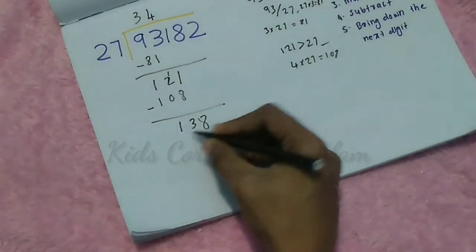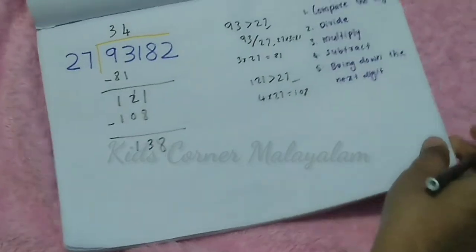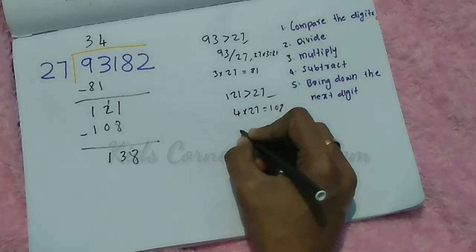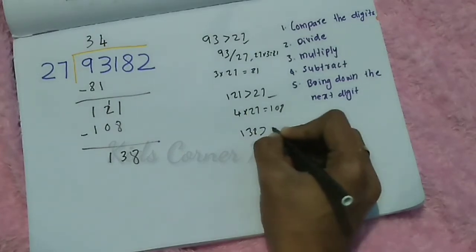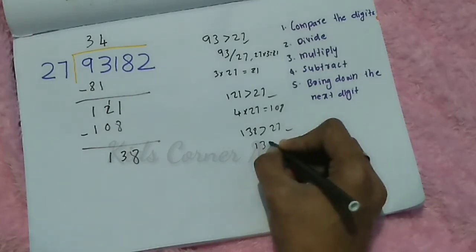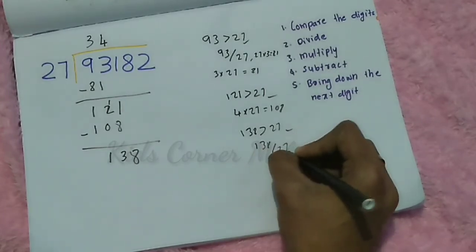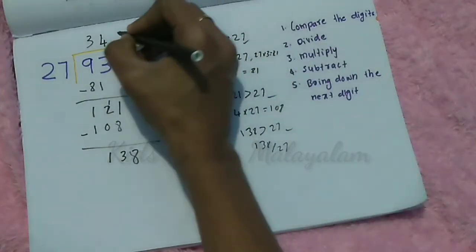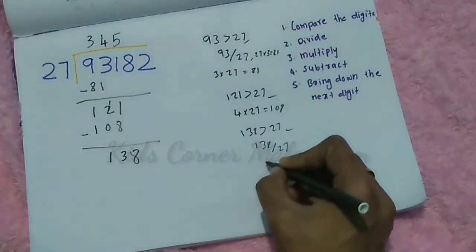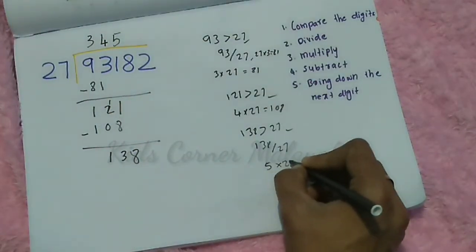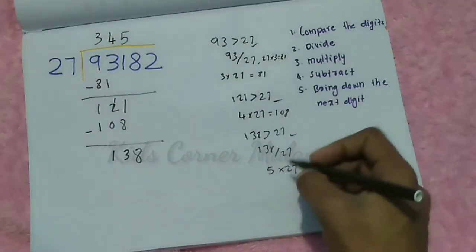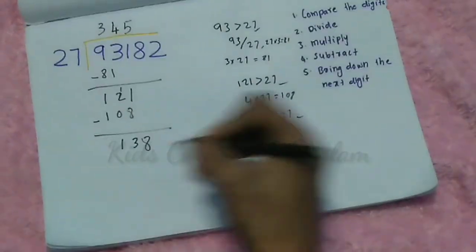138 is greater than 27, so we continue. We divide 138 by 27 — that is 5 times. The next quotient digit is 5. We multiply 5 into 27, which gives us 135.